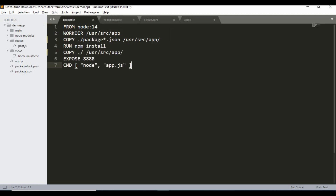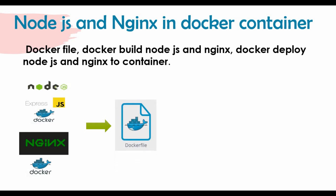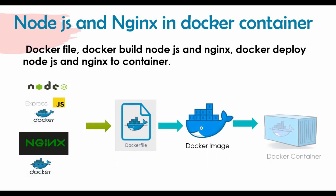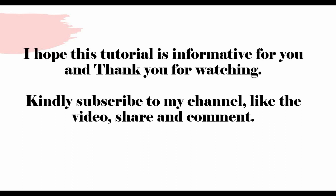So we've seen how to write the Dockerfiles for both Node.js and Nginx, create the default.conf for Nginx, build the images, and run the containers. All the details will be available on GitHub for download. In the upcoming tutorial we'll create a Docker Compose file so we don't have to separately create and link containers — just one 'docker-compose up' command will start everything. I hope this tutorial was informative — thank you for watching, and please subscribe, like, share, and comment.